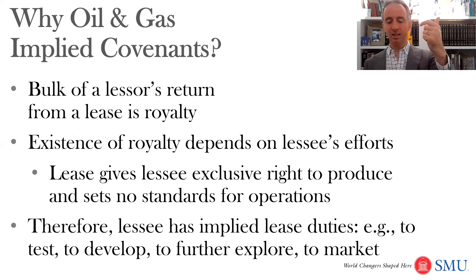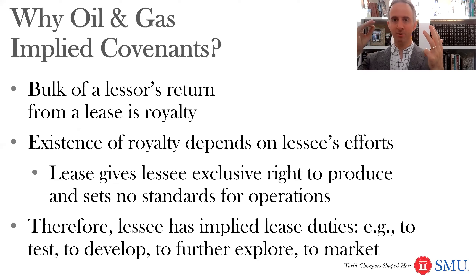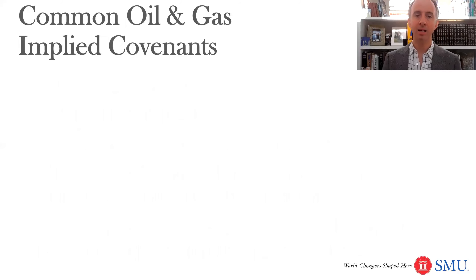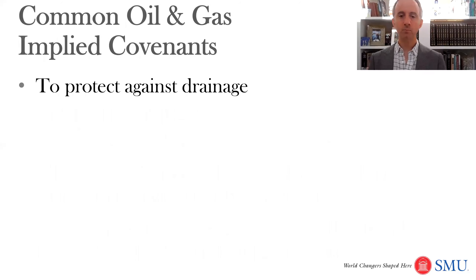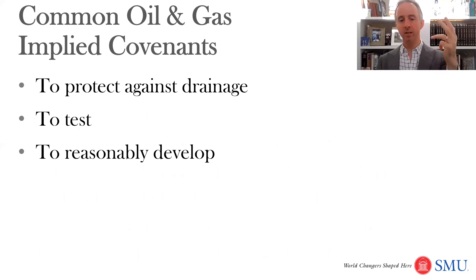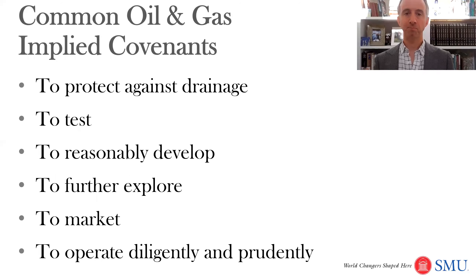We have implied covenants because the lessee has the exclusive right to produce, and all the main compensation to the lessor comes from its action. So we've placed some implied duties on the oil and gas company to act diligently. We've talked about the implied covenant to test — to drill pretty soon to look for oil and gas. Further implied covenants include: to develop, to further explore, and the very important covenant to protect against drainage — to diligently produce so that your neighbors aren't pulling it off your land. And today we'll talk about the implied covenant to market.